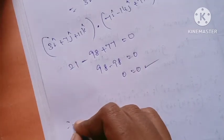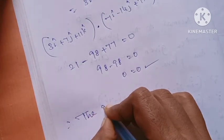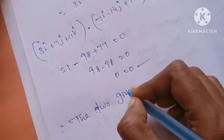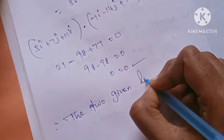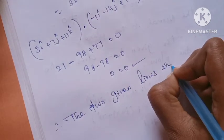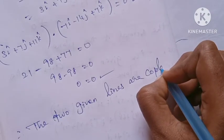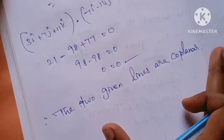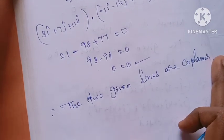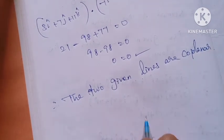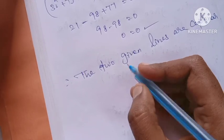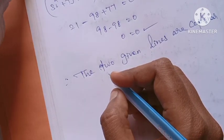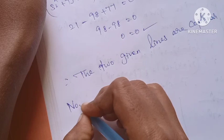So the two given lines are exactly coplanar. The first part is done — it is possible to show the two lines are coplanar. Now the second question is the non-parametric form of the plane equation.